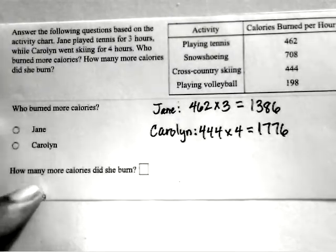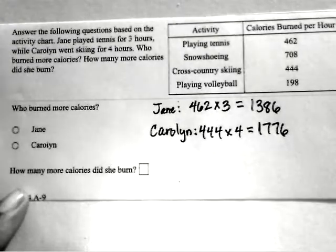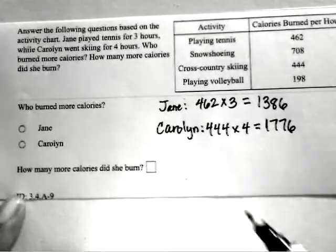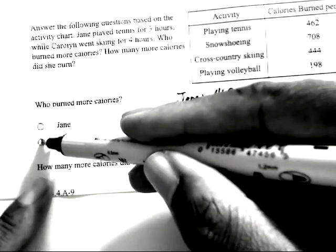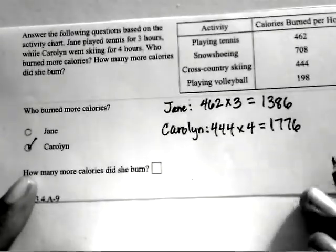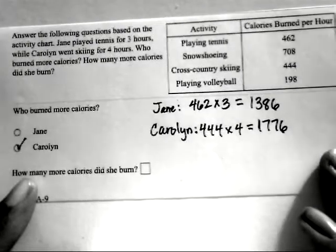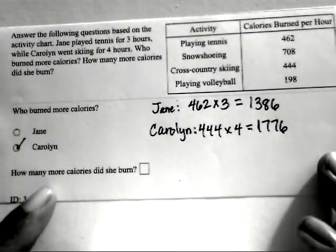So the question is, who burned more calories? In this case, it would be Carolyn, because she burned 1,776 calories in those 4 hours, while Jane only burned 1,386 calories in 3 hours.